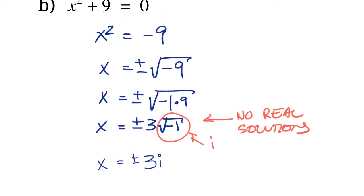If we write out both solutions, x is equal to positive 3i and negative 3i. Now, you might be thinking we haven't really changed anything — all we've done is call the square root of negative 1 i. We haven't gotten rid of that negative 1, there's still no real solutions. But the fact is, 3i and negative 3i are solutions — even though they're not real solutions, they're solutions to the problem.